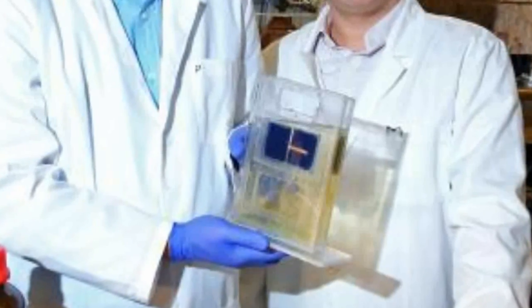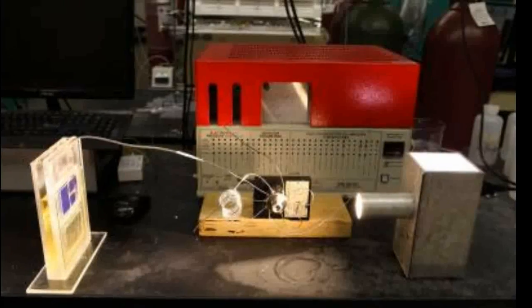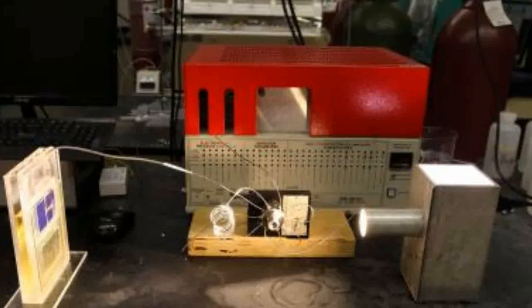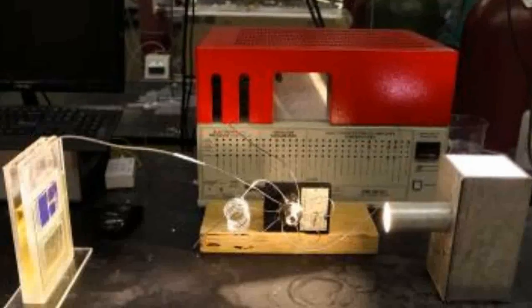The new solar cell is not photovoltaic. It is photosynthetic, the researcher says. Instead of producing energy in an unsustainable, one-way route from fossil fuels to greenhouse gas, we can now reverse the process and recycle atmospheric carbon into fuel using sunlight.